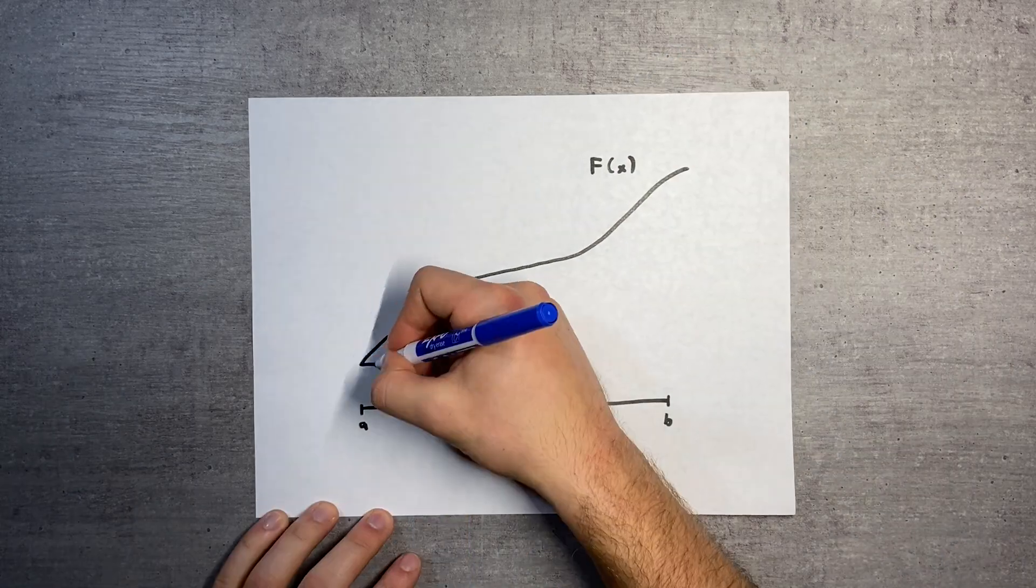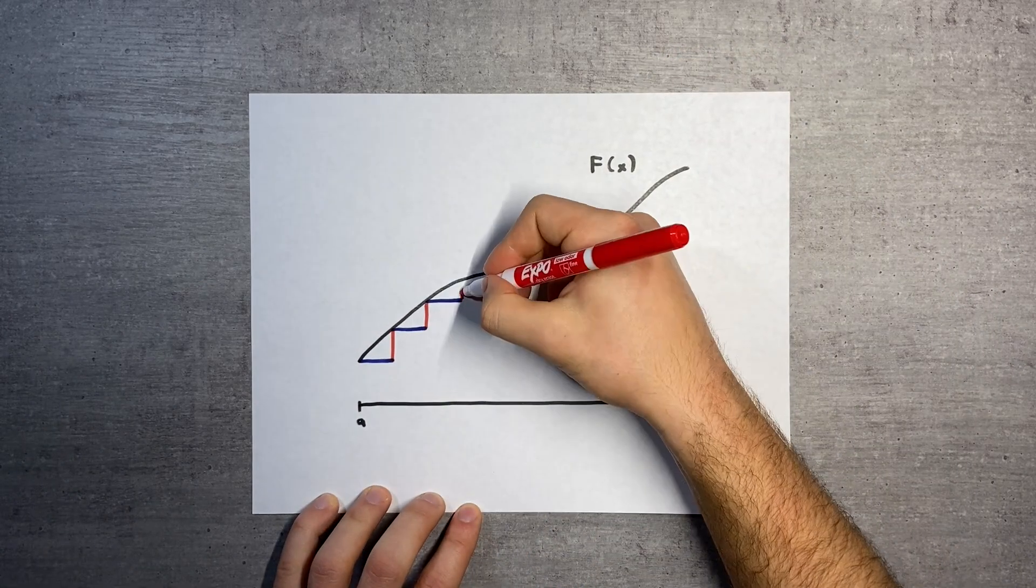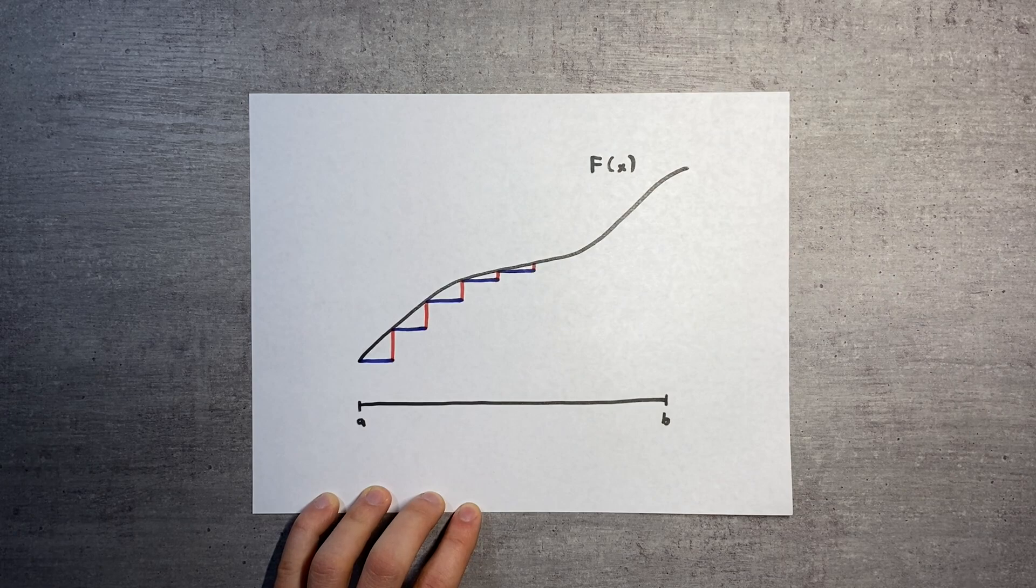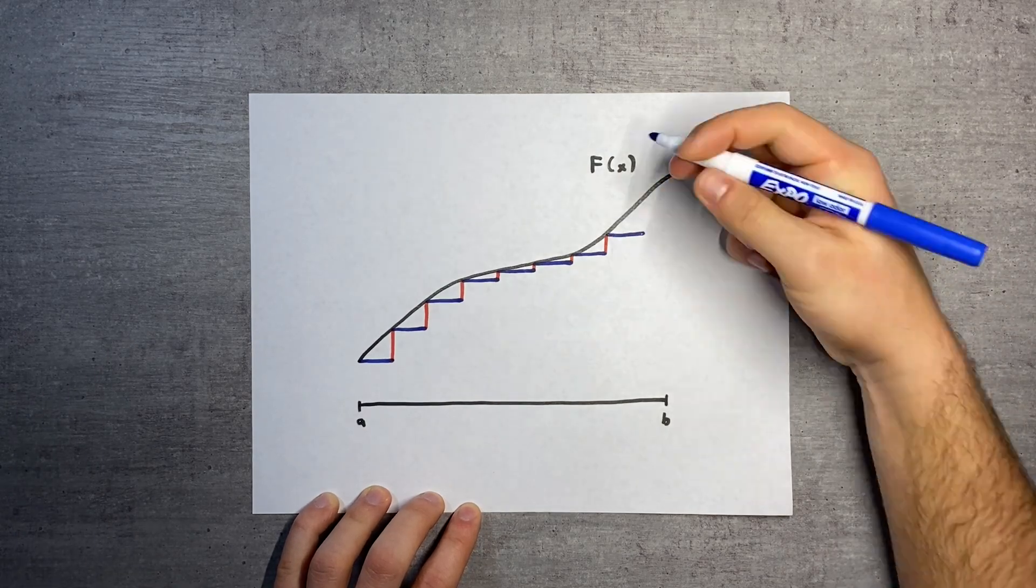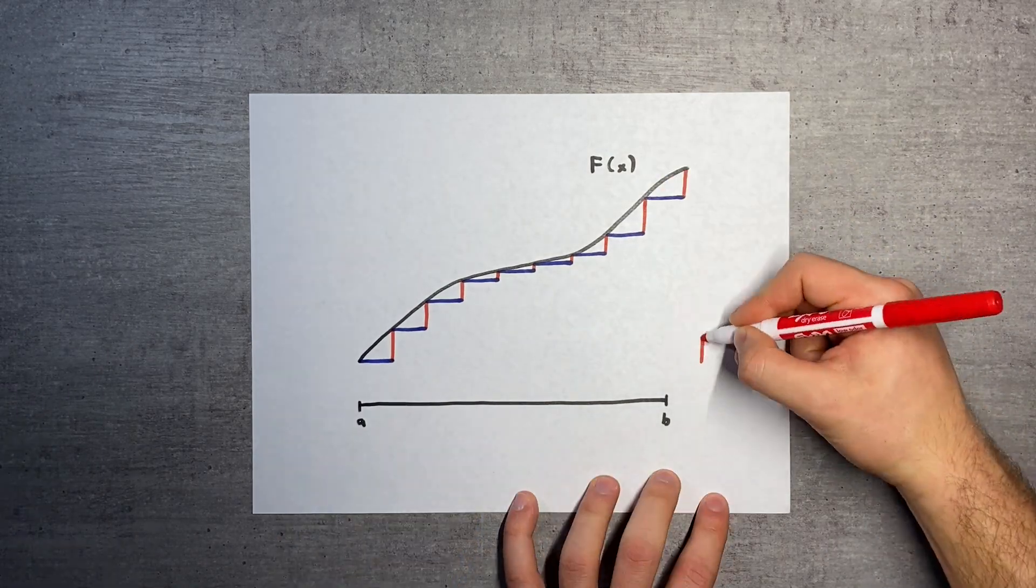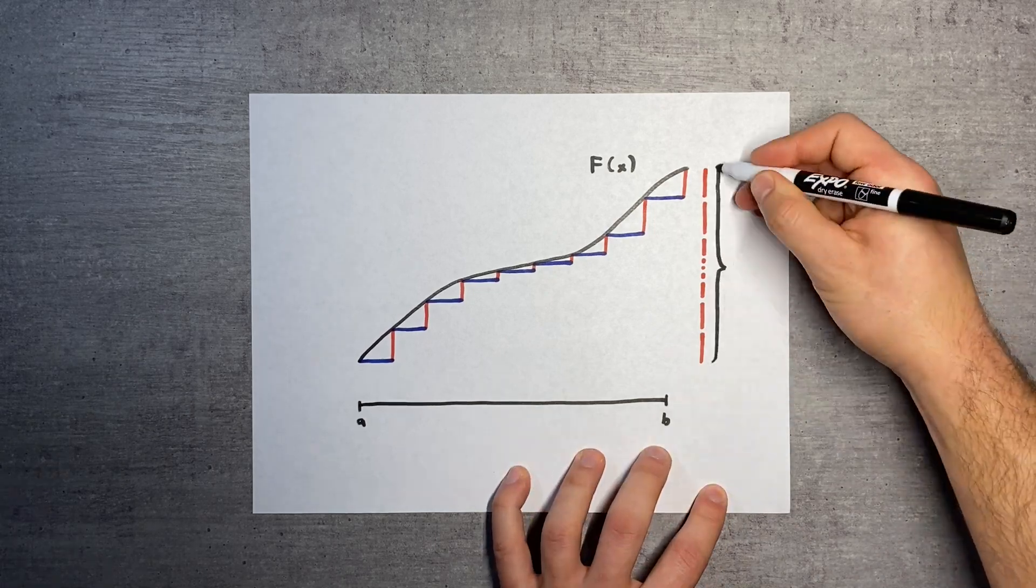Here we have an antiderivative for little f, and we'll find the difference between big F of b and F of a by breaking the function into small pieces. We can describe the total change in F from a to b as the sum of the changes in F on each little piece.